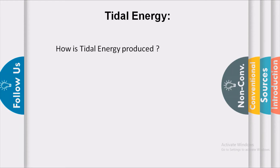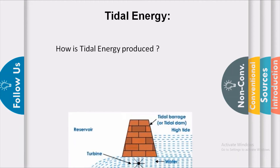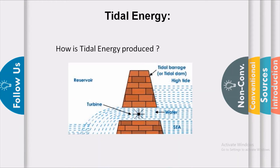How is tidal energy produced? Tidal energy is harnessed by constructing a dam across a narrow opening to the sea. A turbine is fixed at the top of the dam, which converts the tidal energy into electrical energy, as shown in the diagram.